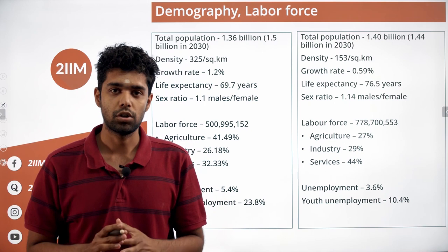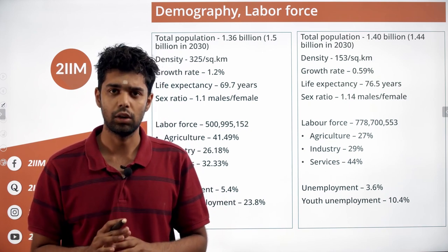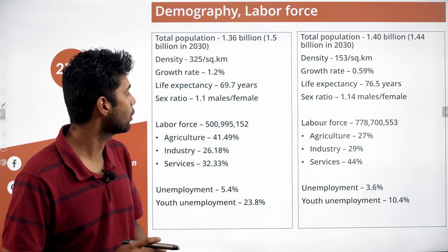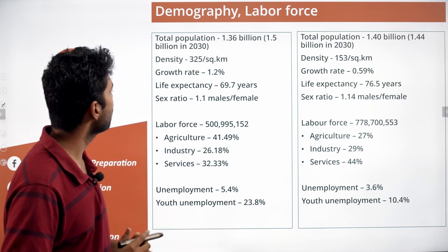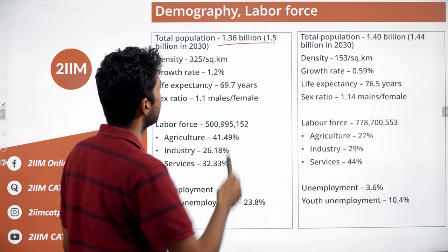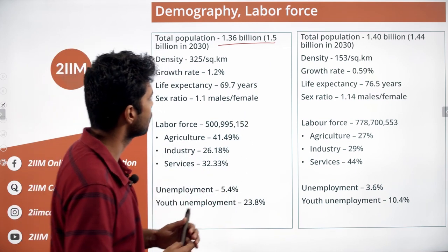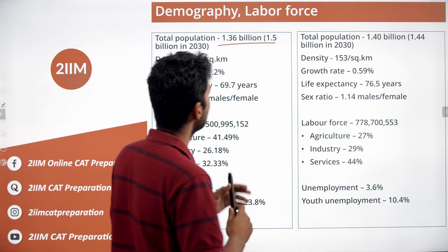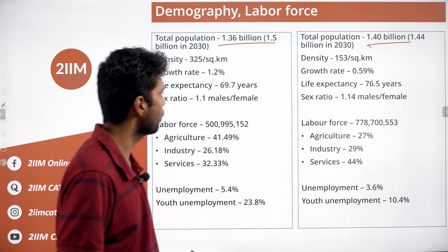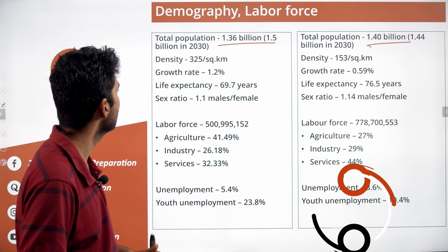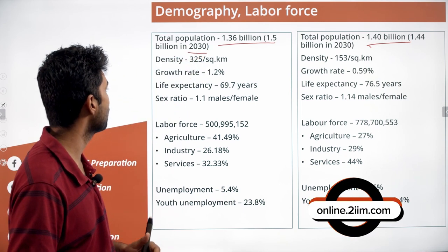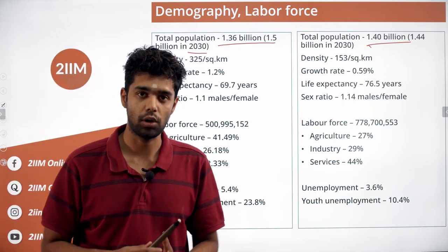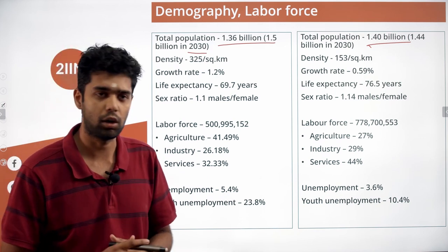First we'll try to understand the population of India and China. They are very large countries with a huge population and they have a significant effect on how the world goes forward. The total population of India is 1.36 billion estimated, while for China it is close to 1.4 billion. It is also estimated that in 2030 the population of India will be 1.5 billion and China will be 1.44 billion. So India is expected to cross China's population close to 2027.